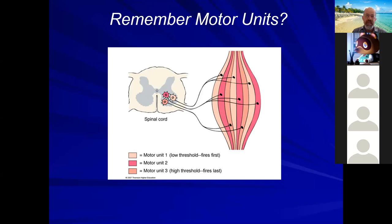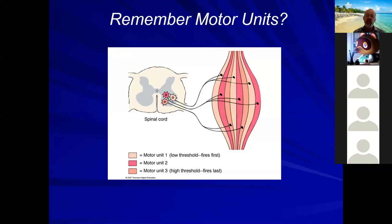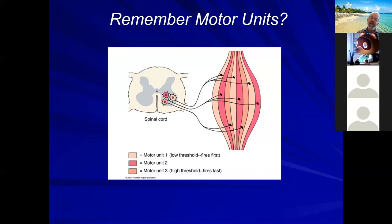One of the things I covered last time was motor units. Remember, motor units refer to a neuron and all the muscle fibers it innervates. There are different size motor units. Small motor units involve a neuron innervating maybe as few as four or five muscle fibers, found in places like the eye and fingers, where you have precise movements but not much power.